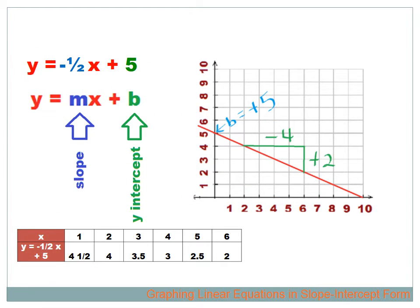So y equals minus one-half x plus 5 is the equation represented by that line on the coordinate plane. It baffles me that that works, so let's test it. Let's create a table showing x and y. I'll arbitrarily pick x values 1 through 6. If x is 1, then minus one-half times 1 is minus one-half, and y equals minus one-half plus 5, or 4 and a half.